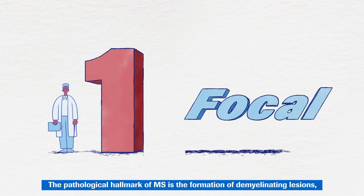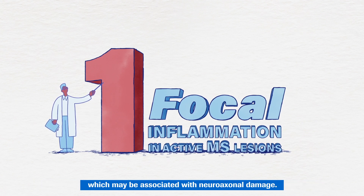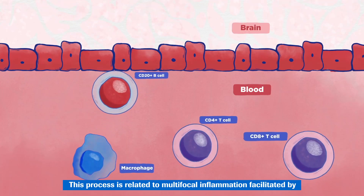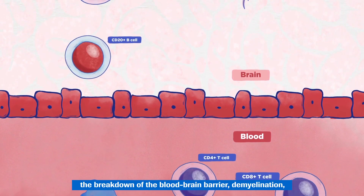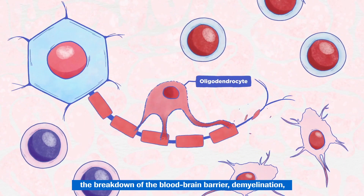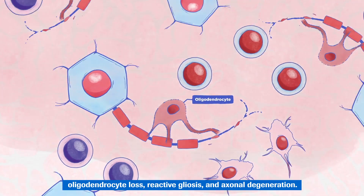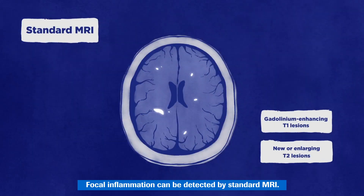The pathological hallmark of MS is the formation of demyelinating lesions, which may be associated with neuroaxonal damage. This process is related to multifocal inflammation facilitated by the breakdown of the blood-brain barrier, demyelination, oligodendrocyte loss, reactive gliosis and axonal degeneration. Focal inflammation can be detected by standard MRI.